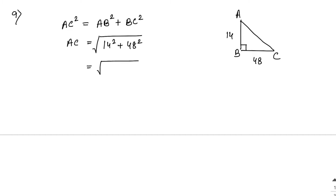14 squared plus 48 squared equals 196 plus 2304, which equals 2500. So AC equals the square root of 2500, which is 50 cm. That is the first answer.